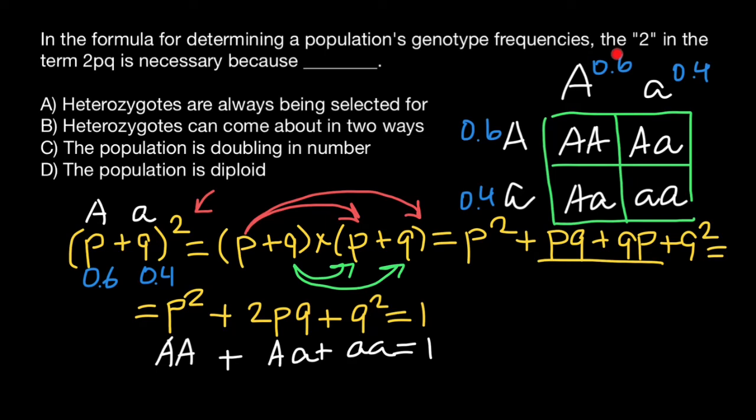You can put frequencies, these frequencies here. So 0.6 times 0.6. And we are going to get a frequency of the homozygous dominant genotype, which is here in this formula.